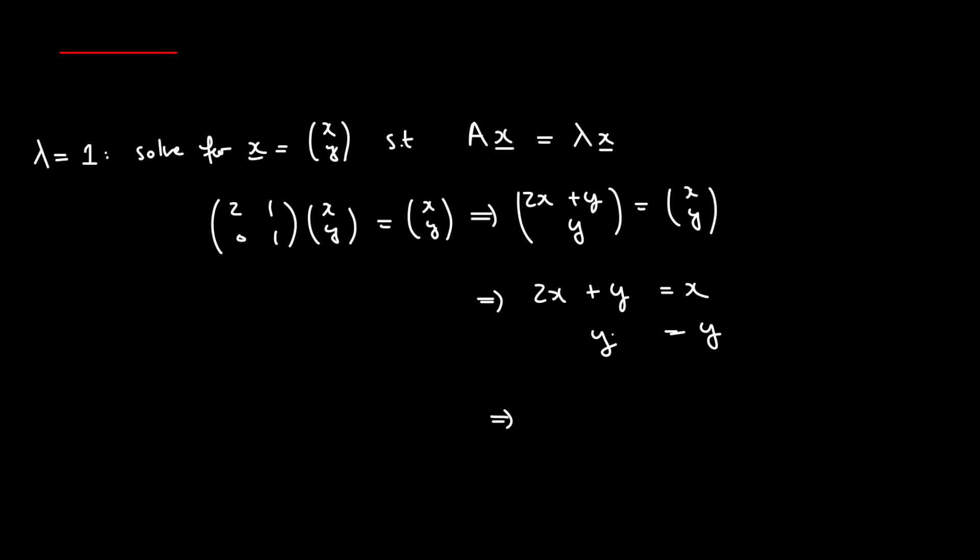So a very simple simultaneous equation which you can solve. Just to clearly see one thing, y can be absolutely anything. So we can let y equal t for any real number. And then the top equation here forces something. It forces x to be equal to negative y so that x is equal to negative t. And so here we see that xy must be equal to just negative t for the x component and t for the y component. So it's just t times negative 1, 1.